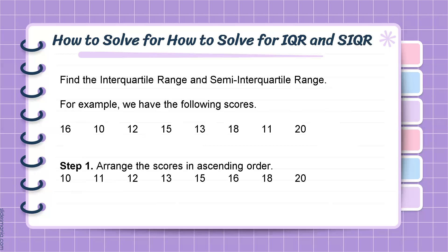Now let's find the interquartile range and semi-interquartile range given an even number data set. We have the scores: 16, 10, 12, 15, 13, 18, 11, and 20. Step 1: Arrange the scores in ascending order. We have: 10, 11, 12, 13, 15, 16, 18, and 20.